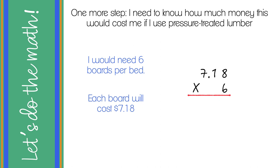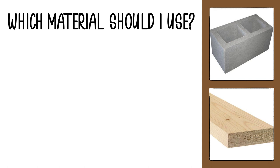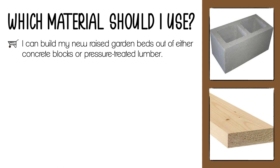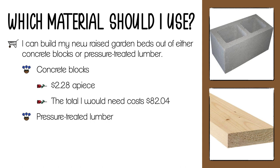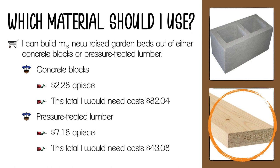So 7.18 times 6: 6 times 8 is 48, write the 8 and carry 4. 6 times 1 is 6 plus 4 carried gives 10; write the 0 and carry 1. 6 times 7 is 42, plus the 1 carried gives 43; carry the 4 and bring it down. That gives us 4308. With two decimal places, that's $43.08. So getting back to the original question: concrete blocks are $2.28 a piece and would cost $82.08 total per bed; pressure-treated lumber is $7.18 a piece but only $43.08 total. So the pressure-treated lumber is actually the better deal, even though it starts out more expensive.